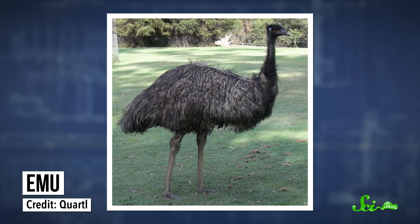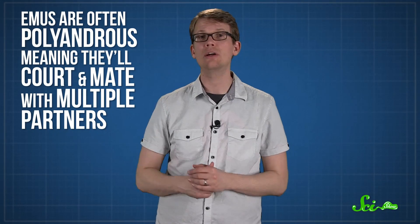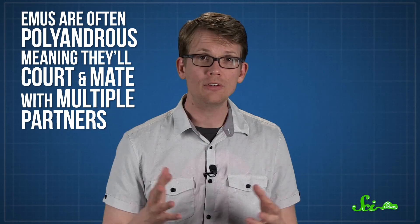These large, flightless Australian birds are often polyandrous, meaning they court and mate with multiple partners. Once a female lays a clutch of up to 24 eggs, her work is done, and she's free to cruise for other males, or do whatever else she wants.